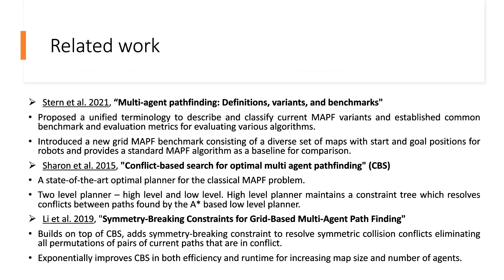The related work regarding the MAPF problem is as follows. The paper 'Multi-Agent Pathfinding: Definition, Variants and Benchmarks' provides a high-level overview of the complete MAPF problem, proposes unified terminology to classify current MAPF variants, and establishes a new grid MAPF benchmark consisting of different map sets which we will use to compare our algorithms. The next paper covers Conflict-Based Search, a state-of-the-art optimal planner for the classical MAPF problem, which can be improved using Symmetry Breaking — a technique that resolves multiple permutations of conflicting constraint pairs and exponentially increases the efficiency of CBS.